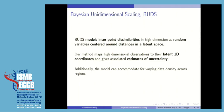Since our method is Bayesian, we are able to provide estimates of the uncertainties of the coordinates we recovered. Additionally, by varying the level of the noise, we are able to accommodate the varying density of the data along the data trajectory.